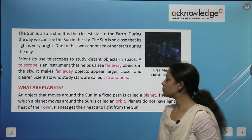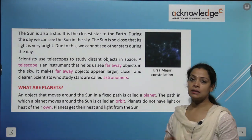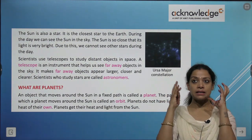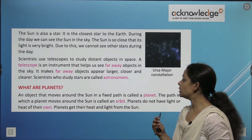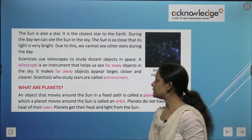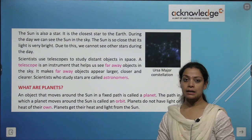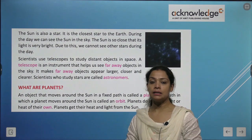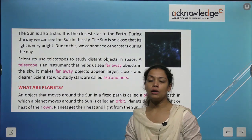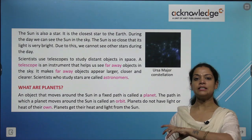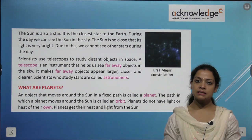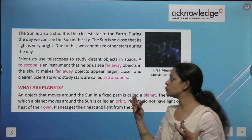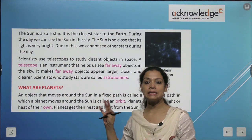Scientists use telescopes to study distant objects in space. A telescope is an instrument that helps us see far objects in the sky — it makes far objects appear larger, closer and clearer. Scientists who study stars are called astronomers, and they use telescopes to study these far objects in the sky.